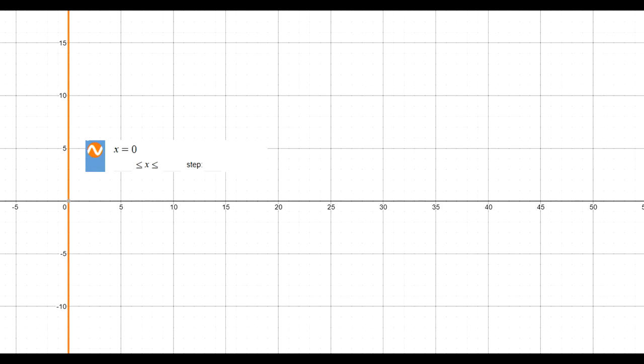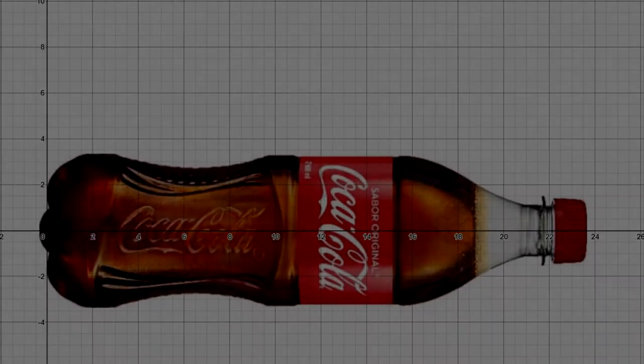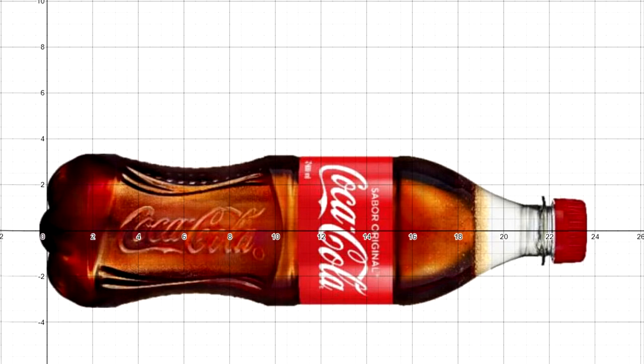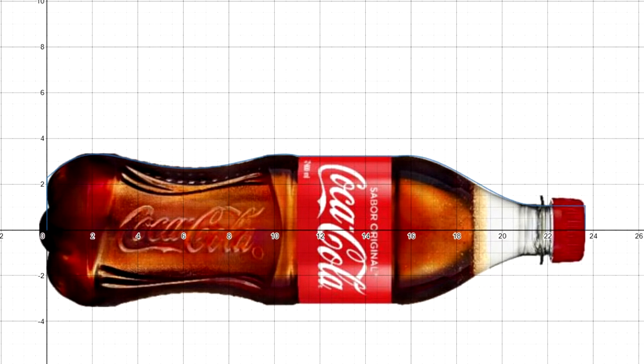Afterwards, we started by setting the limits in which we will analyze the bottle. Then, we started outlining the bottle with graphs, playing with the parameters inside the equation to transform each equation slightly.